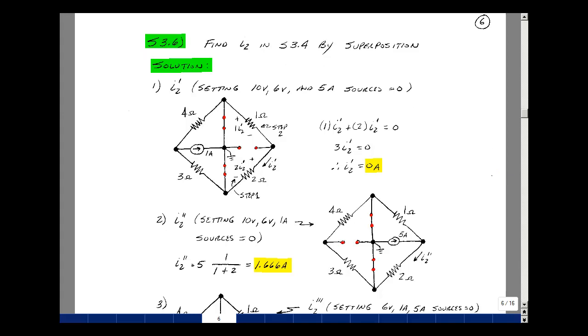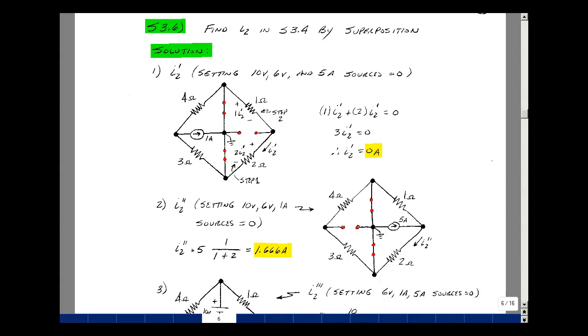Now let's set the other current source equal to zero. That was the 1 amp one. I'll make that an open circuit. And my two voltages, the 10 and 6 volts, I'm still going to set those equal to zero, but now I'll leave the 5 amp current source in. This is the current that we called I2 in our supplemental problem 3.4. This is what we do to the second source.